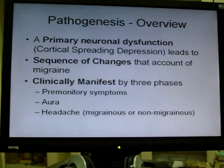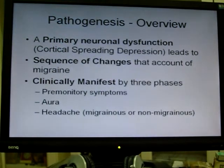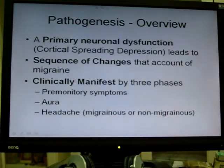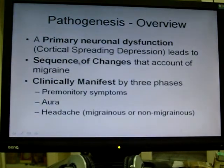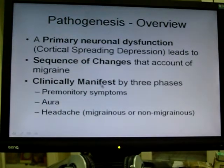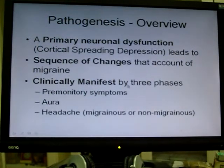I've tried to summarize from UpToDate something that maybe explains most of the features. Please bear with me if it may not be exactly what you see in the textbooks, because this is what seemed to me to be the most logical. An overview of the pathogenesis for migraine is that it's a primary neuronal dysfunction which leads to a sequence of changes that accounts for your migraine, and these changes cause clinical manifestations. Classically, the clinical manifestations of migraine always occur in three phases.